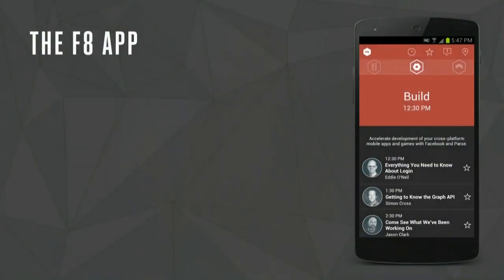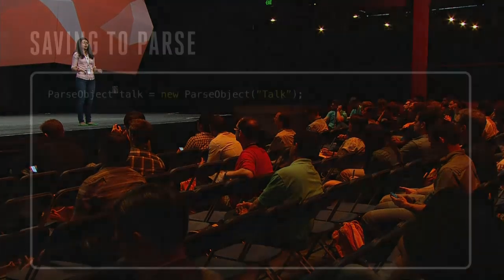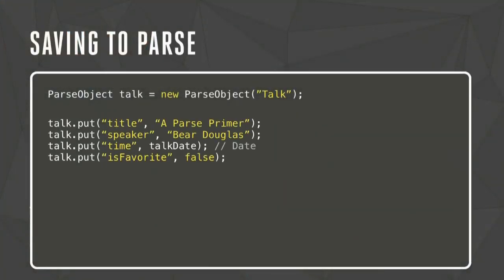This is a screenshot from the F8 app for Android. There is a list of talks underneath the build track. When we want to save something to Parse, we break an object down into key-value pairs: title, time, speaker, and a Boolean value isFavorite. To create this in Parse, all you have to do is define a new Parse object, call it Talk, set those attributes — it looks kind of like a Map in Java — and then call talk.saveInBackground(). Notice all the work you're not doing: you're not worried about writing network tasks, threading, or adding a worker queue. All you have to do is call save in background and Parse takes care of the rest.